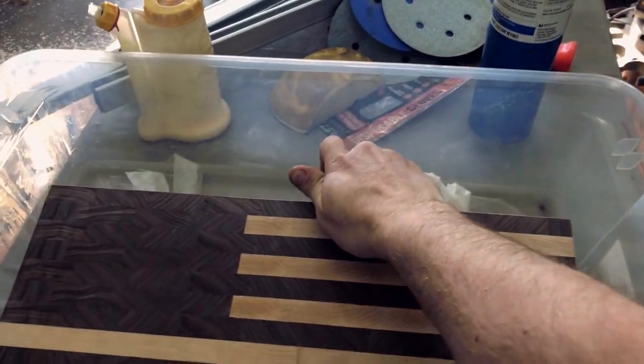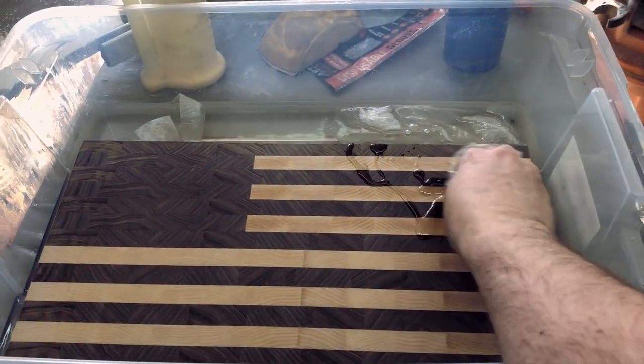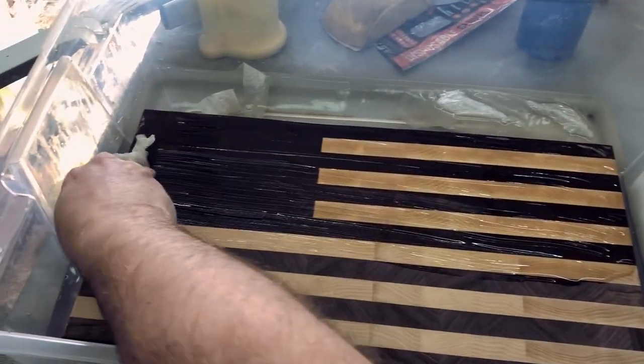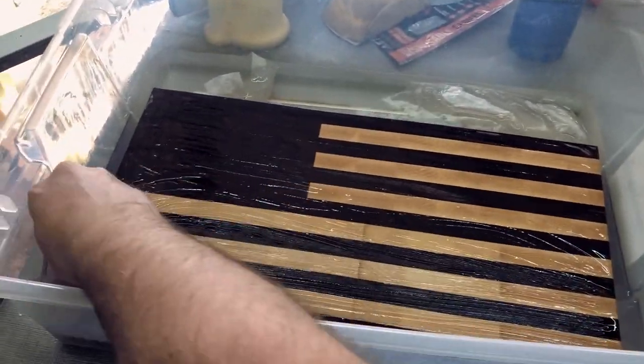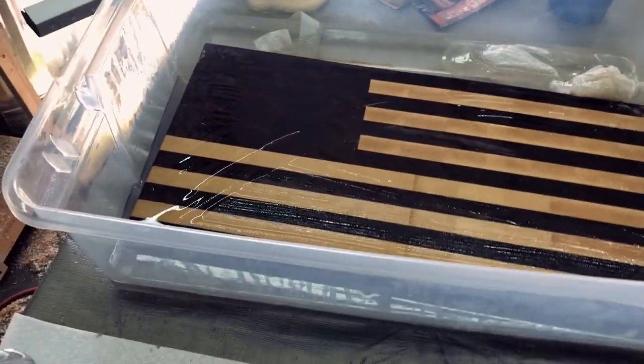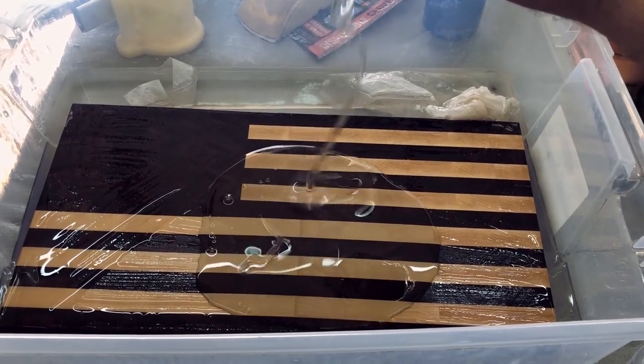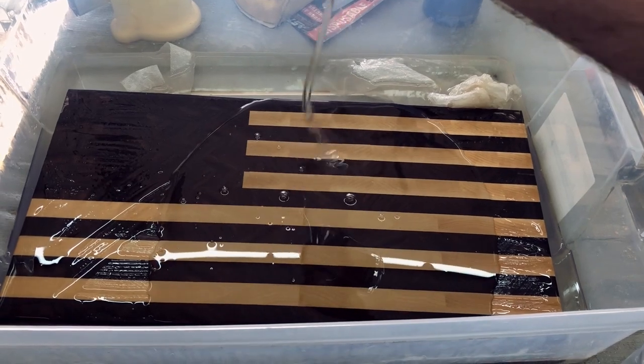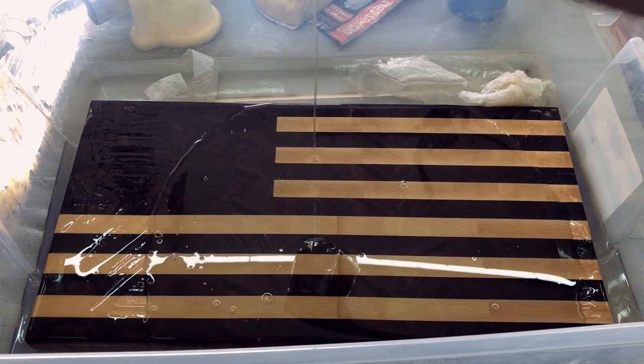All right, it just fits. That is cutting board number one, made from walnut and maple. In just a bit, after this one's done soaking, I'll show you guys what cutting board number two looks like.